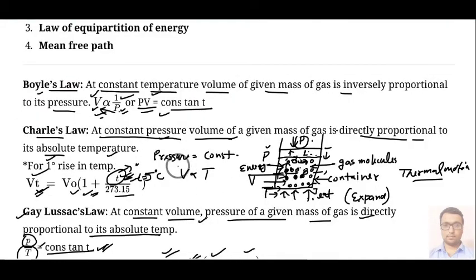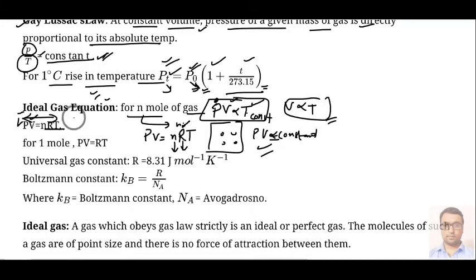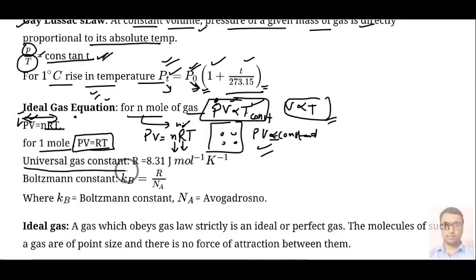Basically, the ideal gas equation is the combination of Boyle's law and Charles' law. For one mole, where n = 1, PV = RT. After that, we have the universal gas constant, whose value is given by 8.31 joule per mole per Kelvin.